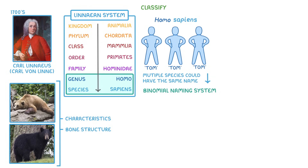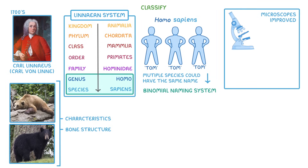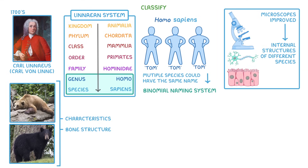This system works pretty well and we still use it today. However, as our microscopes improved and we learned more about the internal structures of different species, new models of classification have been proposed. And although they didn't replace the Linnaean system, they kind of got combined with it.